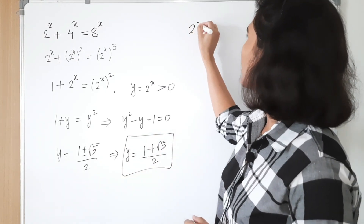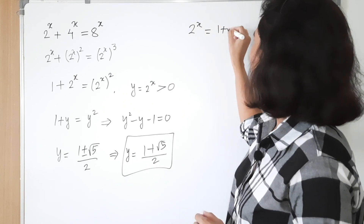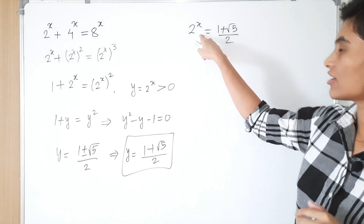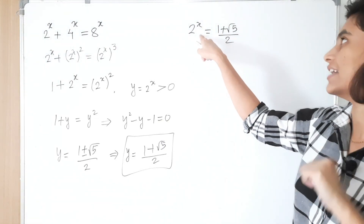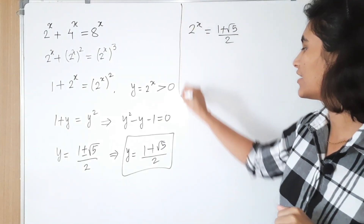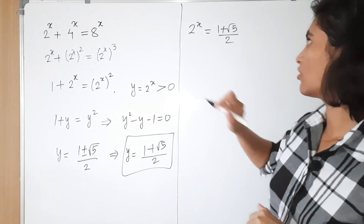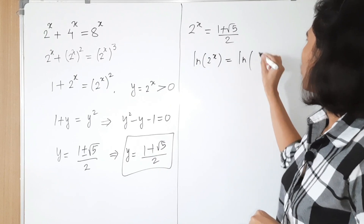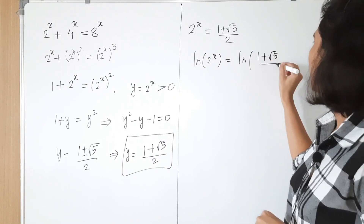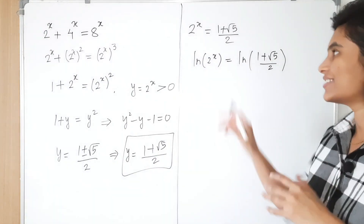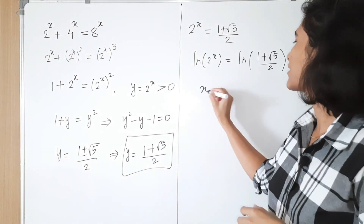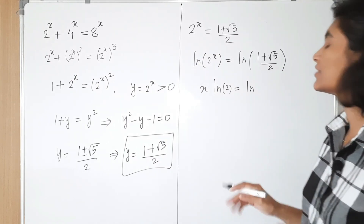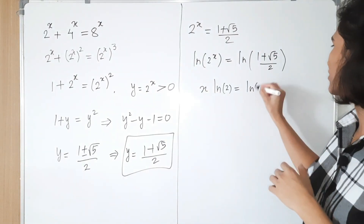That means 2 raised to x equals 1 plus square root of 5 divided by 2. From here, if we take the natural log on both sides, we can find the value of x. Taking natural logarithm on both sides, we get ln of 1 plus square root 5 over 2, which equals x times ln of 2.